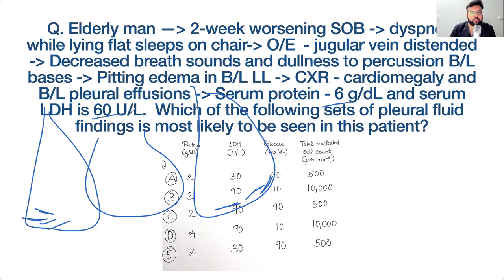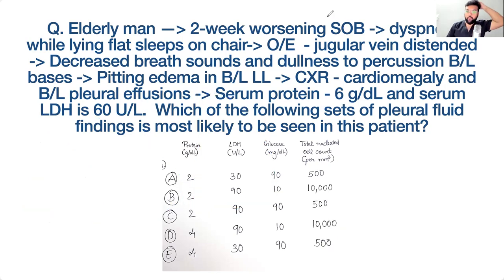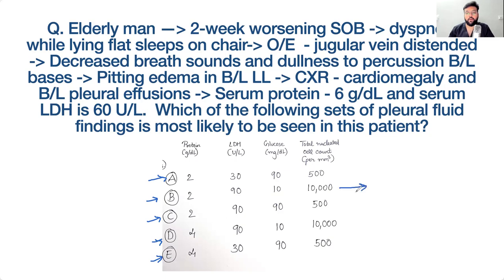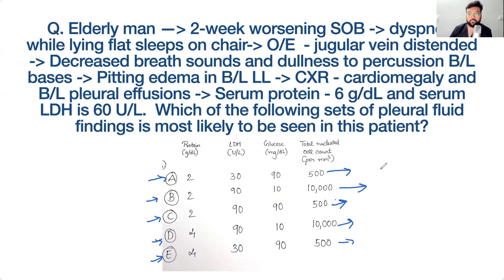Serum protein is 6, serum LDH is 60. If you aspirate pleural fluid and send it for cytology, which set of pleural fluid findings would you choose from five options? Students answer 'A' and 'D.' Option A — is it transudate or exudate? It is transudate.